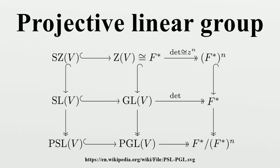Here Z is the center of SL and is naturally identified with the group of nth roots of unity in K. PGL and PSL are some of the fundamental groups of study, part of the so-called classical groups, and an element of PGL is called a projective linear transformation, projective transformation, or homography. If V is the n-dimensional vector space over a field F, namely V equals F^n, the alternate notations PGL_n(F) and PSL_n(F) are also used.